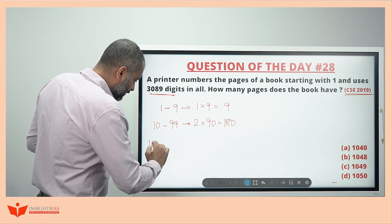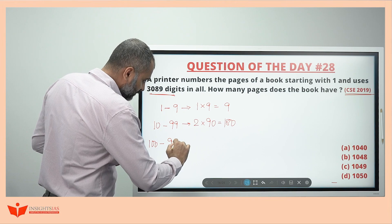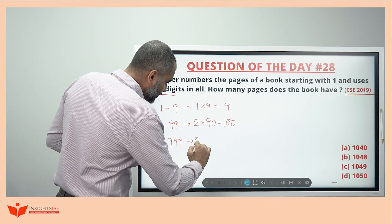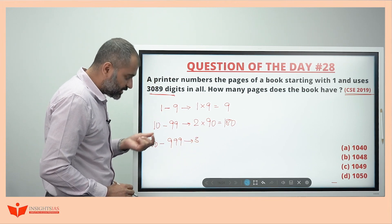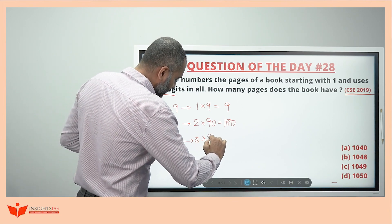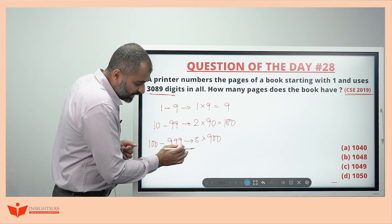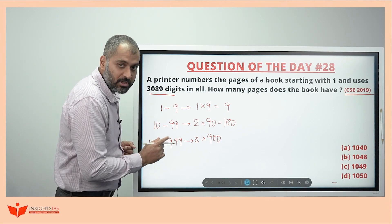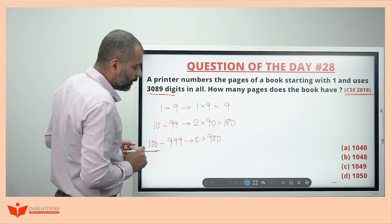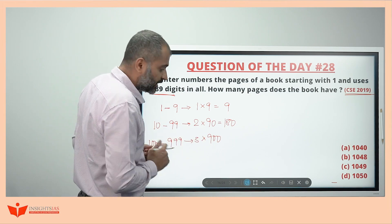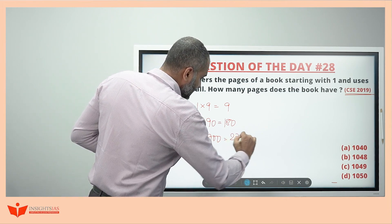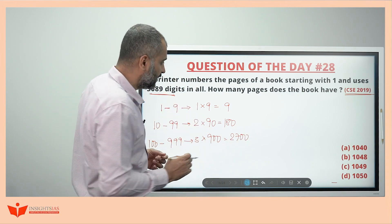Similarly now 100 to triple 9, this is all 3 digit numbers. Each digit is 3 digit number. How many such are there? 900 will be there. I am counting 100 as well as 999. So that is nothing but 900 numbers are there, of each digit is 3. So totally, this is 2700 digits printed till here.